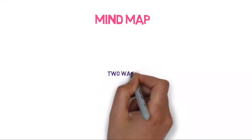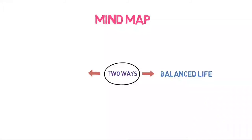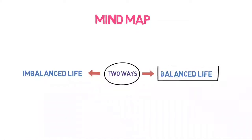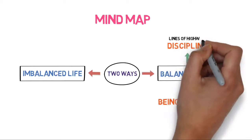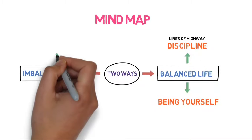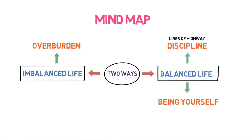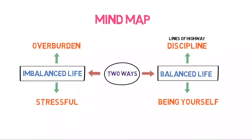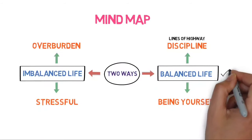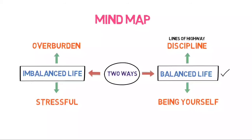The author explained two ways of living life: a balanced life and an imbalanced life. He explained the ways to live a balanced life and how imbalance can create chaos. For balance in life, you must have discipline and an attitude of being yourself. The author gave an example of lines on highways to explain discipline, and explained how imbalance created an overburden in his life — a constant need to do something new made him stressful, constantly comparing himself and trying to become someone else. He concluded that you must have balance in life and live comfortably rather than living an imbalanced life burdened by overwork.